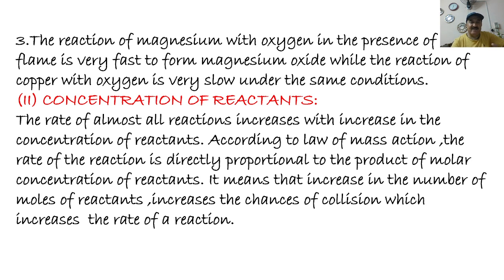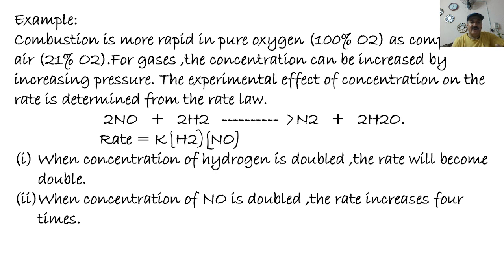For example, combustion is more rapid in pure oxygen (100% oxygen) compared to air, which contains only 21% oxygen. For gases, if the reactants and products are in a gaseous state, pressure can affect the concentration — concentration can be increased by increasing pressure. For the reaction of NO and H2 (both gaseous reactants), by increasing pressure the reaction moves from higher number of moles towards lower number of moles, and the reaction proceeds in the forward direction.